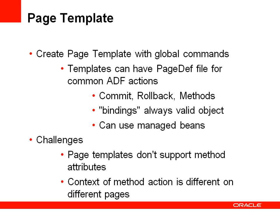A page template that you define can have any kind of ADF Faces component in it, and when you build new pages based on the template, those components will show on pages that consume the template. In addition, a template can have an ADF binding file — the page definition file. I can use this page definition file to define common tasks like commits, rollback, or methods exposed on a general level. Because the bindings object used with ADF expression language is always available, I can use the bindings reference from a command button or menu item to access the binding layer.